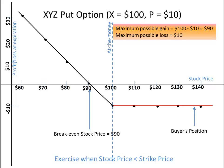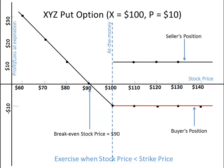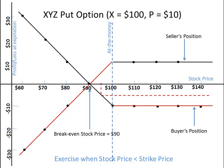The maximum possible loss for the buyer is $10. This option is in the money for prices below $100. The seller's position is opposite to the buyer's position — for the seller, the maximum possible gain is $10 and the maximum possible loss is $90. At the stock price of $95, the buyer should exercise the option, because by doing so the buyer cuts down the losses from $10 to $5.